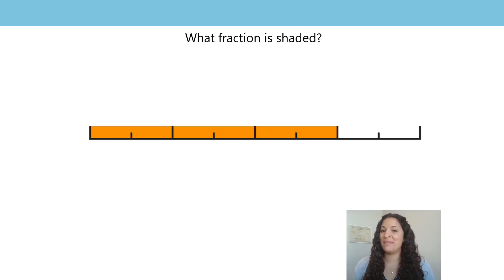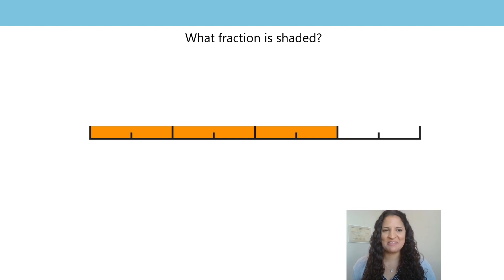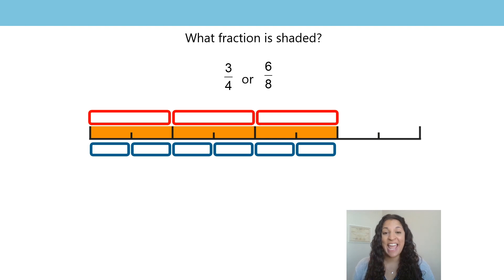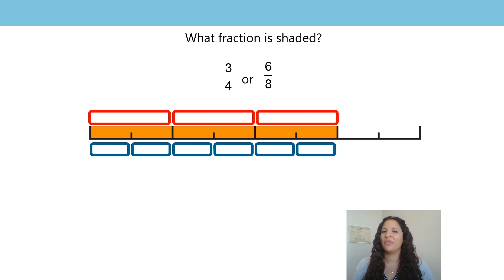Let's have a look at this image together. What fraction is shaded? Is there more than one way to express what fraction is shaded? Pause the video and write down what fraction you see. One way you could have written the fraction is three quarters, because if you see the whole divided into four equal parts, you have three of those equal parts. Or you could have written six eighths, because if the whole is divided into eight equal parts, then you have six of them shaded. Well done if you had both three quarters and six eighths — they are both correct.